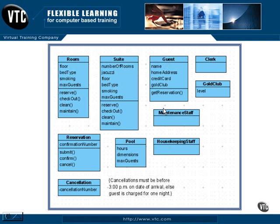There are a number of roles that come into play in the hotel system. We have the guest, and the guest has attributes like name, home address, credit card, and whether or not the guest is a gold club member — which shows us we need a gold club class — and operations such as get reservation. We also have a number of classes of hotel employees, such as clerk, maintenance staff, and housekeeping staff.